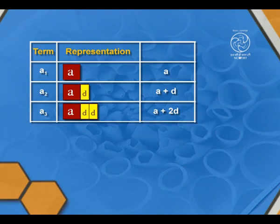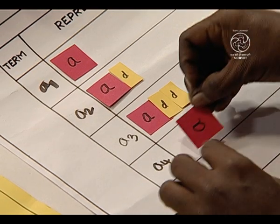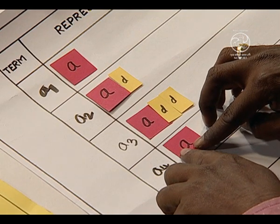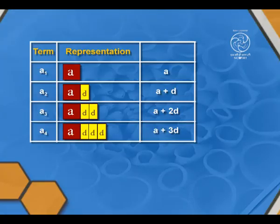For the fourth term, we add D to the third term. We already have the third term as A plus 2D. Now we will add one more D. This is the fourth term, so the fourth term is A plus 3D.